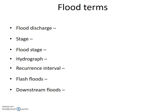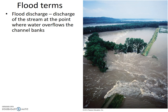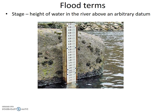Flood discharge is the discharge of the stream at the point where water overflows the channel banks. It is hard to measure because the stream often overflows its banks in many different places. Remember, discharge is volume per time, or velocity times cross-sectional area. The picture shown depicts where flood waters broke through a levee — one good place to measure flood discharge, where you can get a velocity and estimate the cross-sectional area.